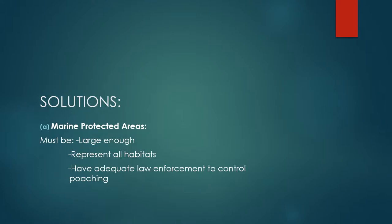Marine protected areas should be the main priority of many fish industries in the world. The management systems are failing to maintain the productivity and biodiversity of marine ecosystems in South Africa. For a South African marine protected area to be successful, it must be large enough, represent all habitats, have adequate law enforcement to control poaching, and support the community's financial income, education, and recreational rights.